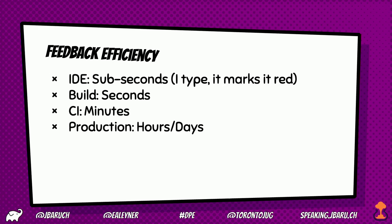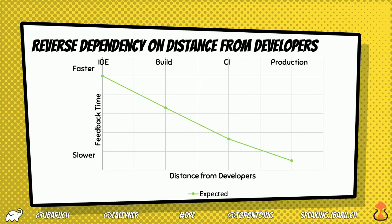The further away feedback is from the developer, the less we wait for it — it's a reverse dependency on distance. IDE, build, then CI and production. Now the build is an anomaly here because it's very close to developers. We run it all the time — after every couple of statements we want to check. But it's not seconds, it's minutes, tens of minutes. So the build is the outlier here. And we all know about that XKCD comic — but no one is actually happy that their build is slow.